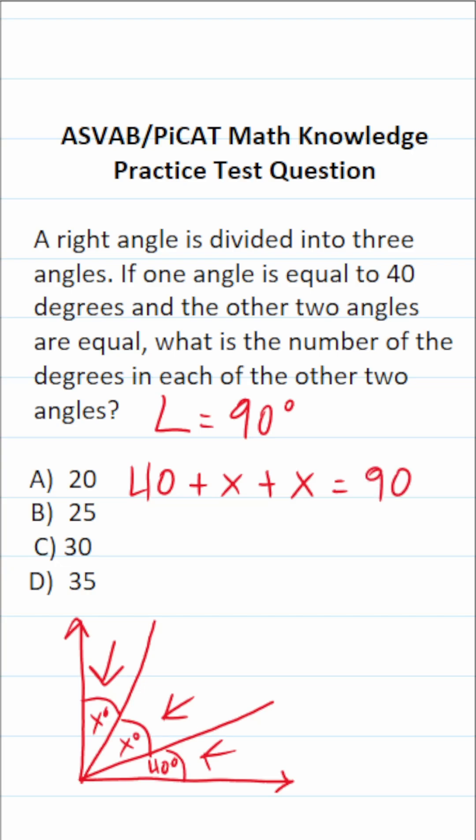So all we have to do is solve this one for x to get our answer. This becomes 40 plus, what is x plus x? It's going to be 2x equals 90.